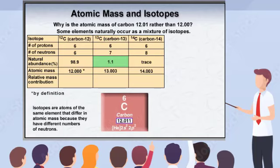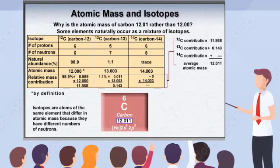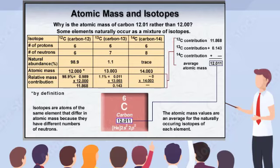Only around 1% of the naturally occurring carbon atoms exist in the carbon-13 form, and fewer yet exist as carbon-14. But their contribution is significant enough that it raises the average atomic mass to 12.01. The atomic mass values presented in the periodic table are an average of the naturally occurring isotopes of each element.